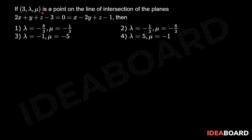If (3, lambda, mu) is a point on the line of intersection of the planes 2x + y + z - 3 = 0 and x - 2y + z - 1 = 0, then let P = (3, lambda, mu). Given that P is a point on the line of intersection of the planes.